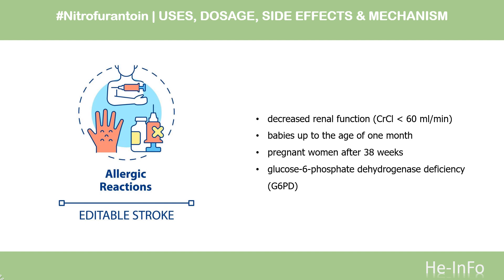Nitrofurantoin is also contraindicated in babies up to the age of 1 month, as they have immature enzyme systems in their red blood cells and glutathione instability, so nitrofurantoin must not be used because it can cause hemolytic anemia. For the same reason, nitrofurantoin should not be given to pregnant women after 38 weeks of pregnancy. Nitrofurantoin is also contraindicated in patients with glucose-6-phosphate dehydrogenase deficiency (G6PD) because of the risk of intravascular hemolysis resulting in anemia.